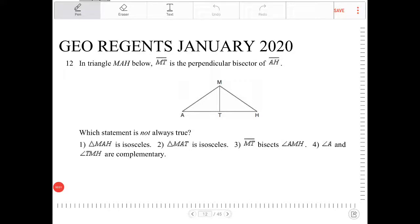In triangle MAH below, MT is the perpendicular bisector of AH. All right, so I'm going to label that. MT is the perpendicular bisector of AH, meaning these two segments are going to be the same, and that is going to be a right angle there.